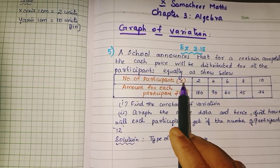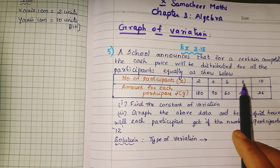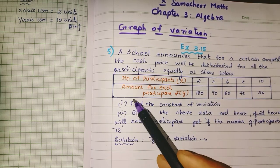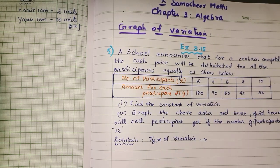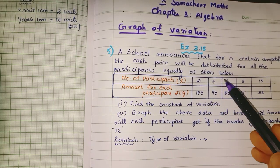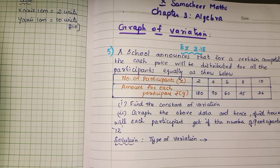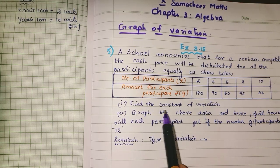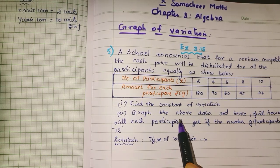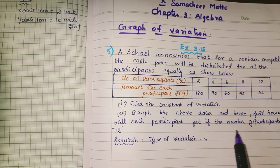X is the number of participants. The amount for each participant is given: 2 participants get 180, 4 participants get 90, 6 participants get 60. Find the constant of variation, graph the above data, and hence find how much each participant will get if the number of participants is 12.